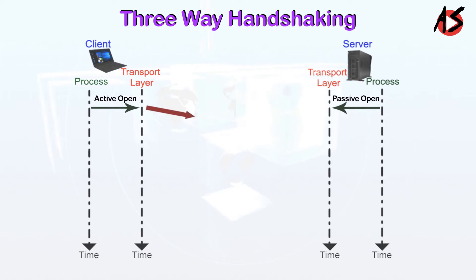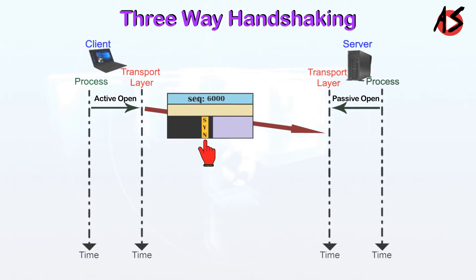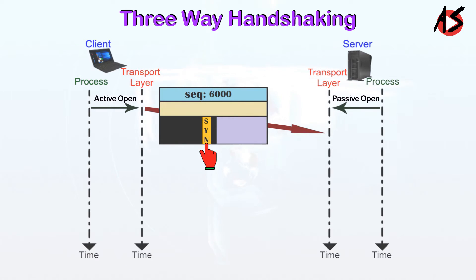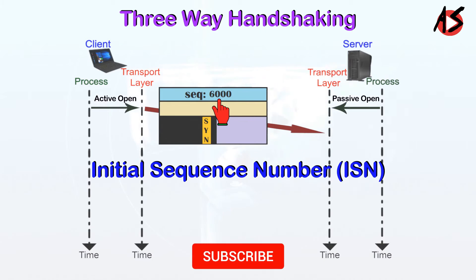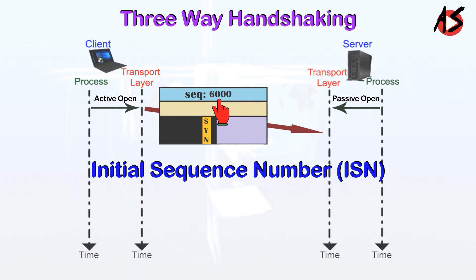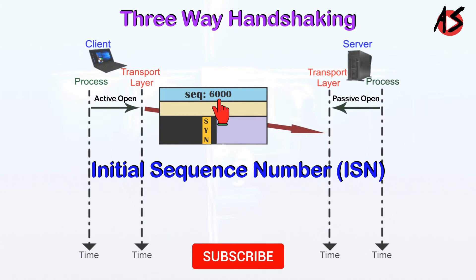First, the client sends the first segment — the SYN segment — in which only the SYN flag is set. This segment is for synchronization of sequence numbers. The client takes a random number called the initial sequence number (ISN), suppose it is 6000. The SYN segment is a control segment and carries no data; however, it consumes one sequence number. When data transfer starts, the ISN is incremented by one. We can think of the SYN segment as containing one imaginary byte.